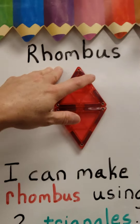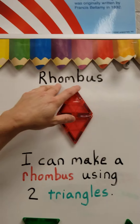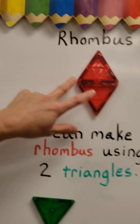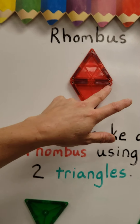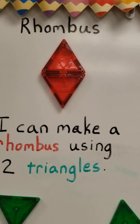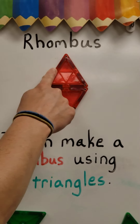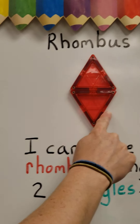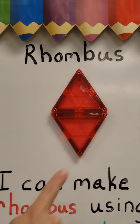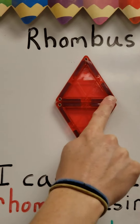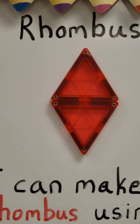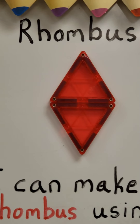Our last shape that we're going to look at is a rhombus. And a rhombus is also known as a diamond. And it has one, two, three, four sides and one, two, three, four vertices.